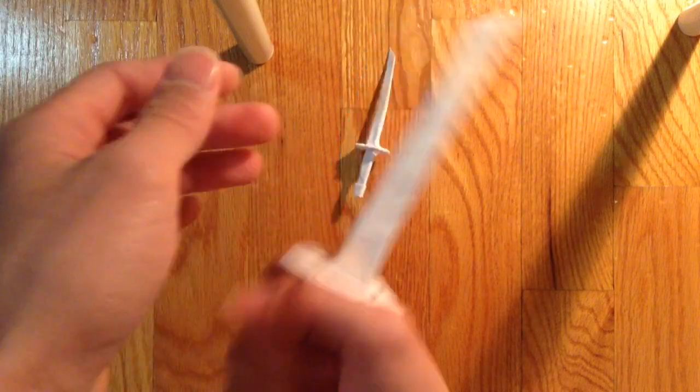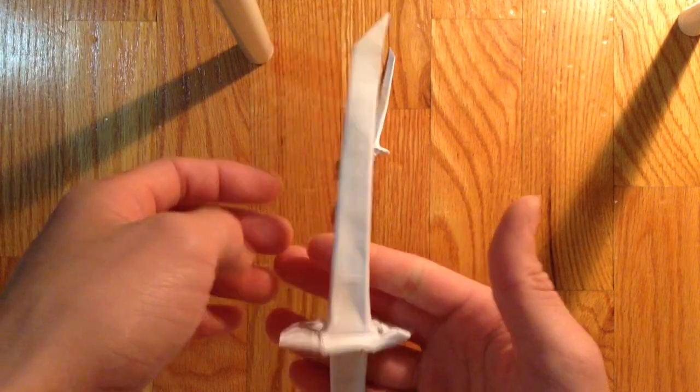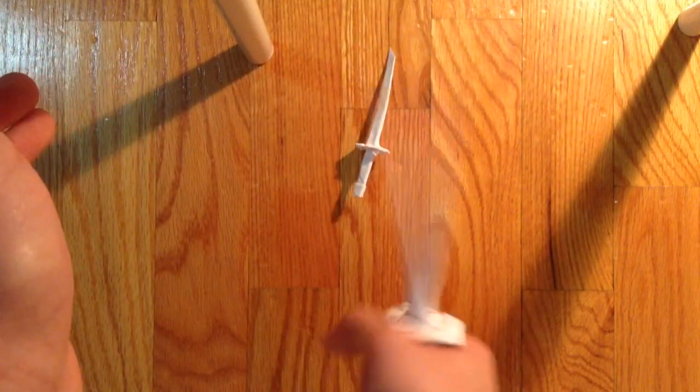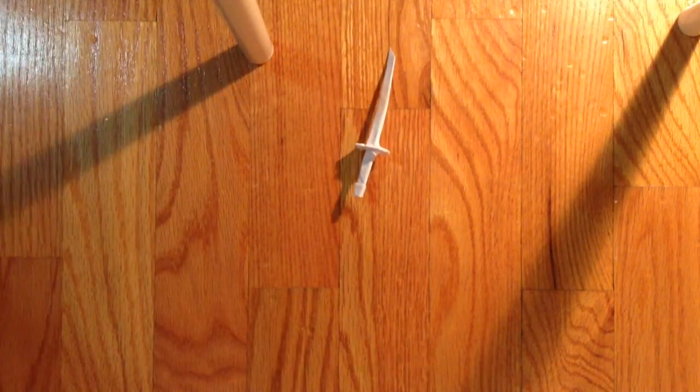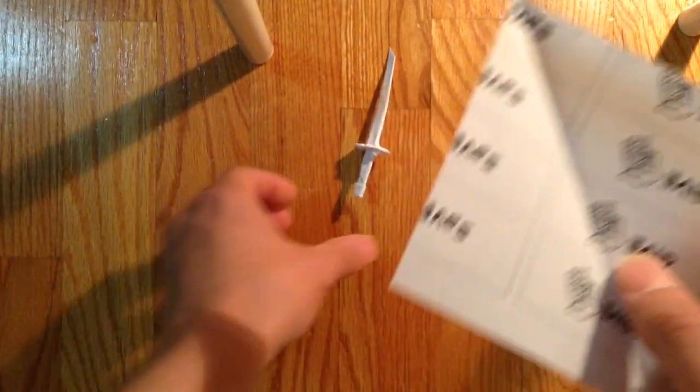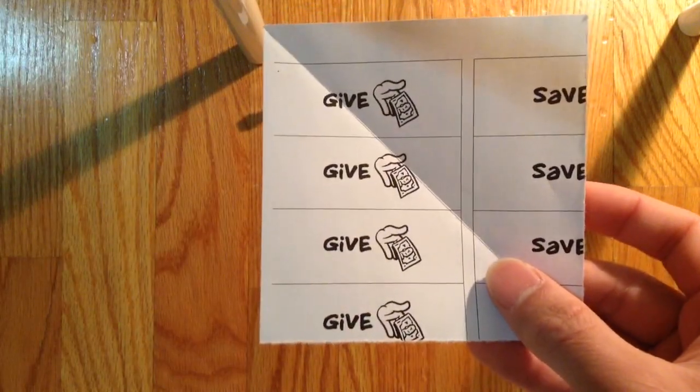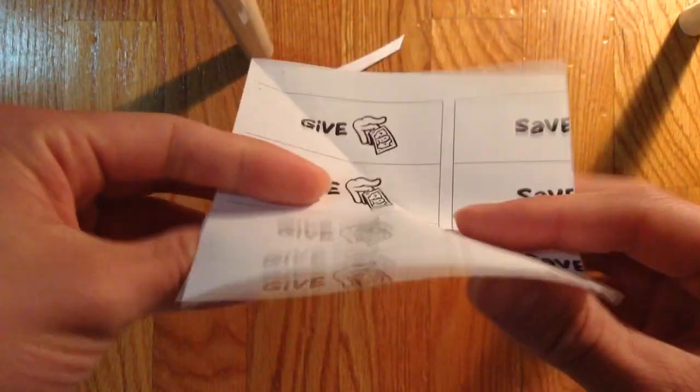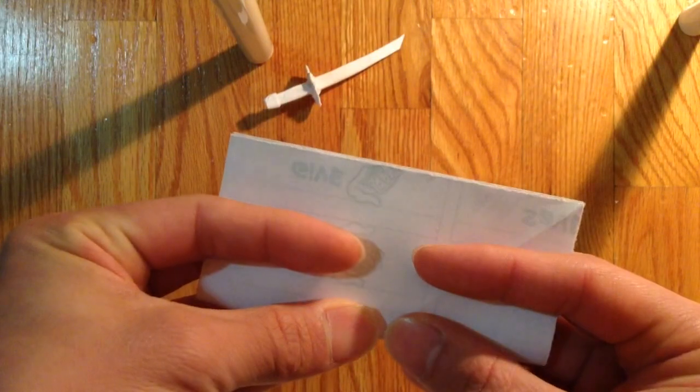It's called a tanto, something like that. So you might want a bigger paper for a sword. First you need a square piece of paper and you're going to make an 8 by 8 grid, so you're going to fold it in half like this.